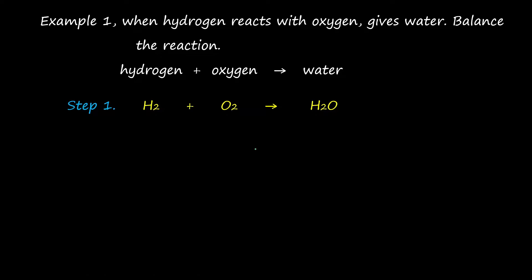The second step is to place the total valence of each atom above it. The total valence for hydrogen: one hydrogen has 1 valence, but here it is 2 atoms, so 2 times 1 equals 2. For oxygen, one oxygen has a valence of 2, but here it is 2 atoms, so 2 times 2 equals 4.